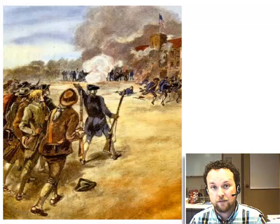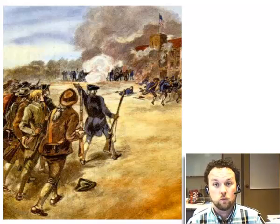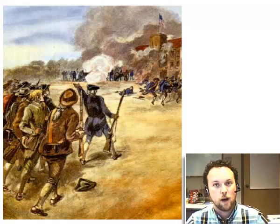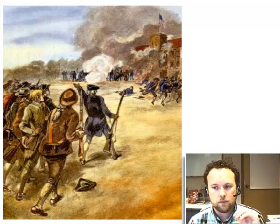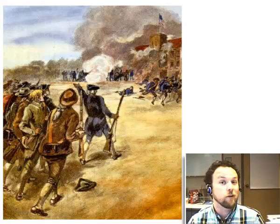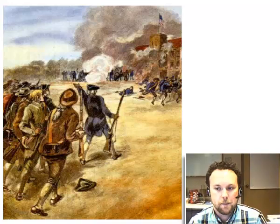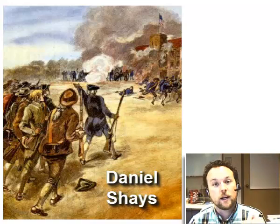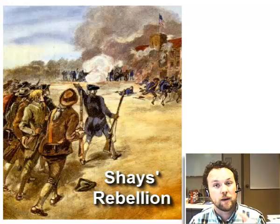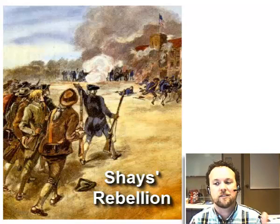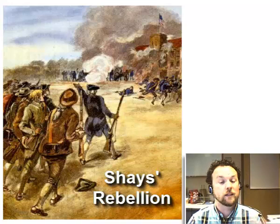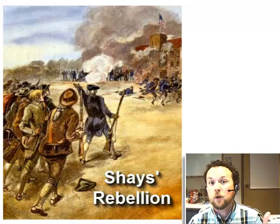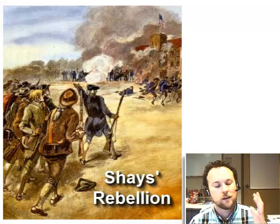The group most significantly hit by the economic depression was farmers. During the war, many farmers had borrowed money for farm equipment, but as prices dropped after the war they couldn't pay back their debts. In Massachusetts, taxes were raised, and if a farmer couldn't pay his debts, the government would seize his farm. In response, a man named Daniel Shays — a former Minuteman — organized a revolt in 1786 known as Shays' Rebellion. Those involved attacked courthouses to prevent the state from taking more farms, and the revolt was eventually put down by the Massachusetts militia. Shays' Rebellion was a wake-up call that the Articles of Confederation were not working.